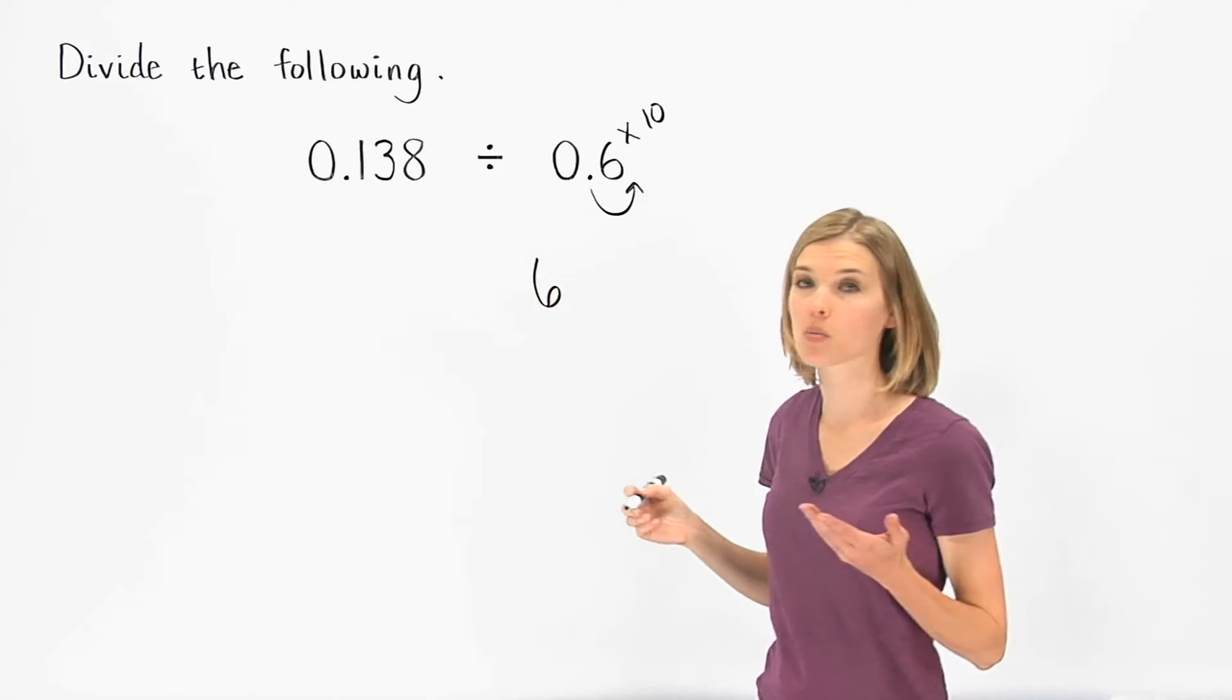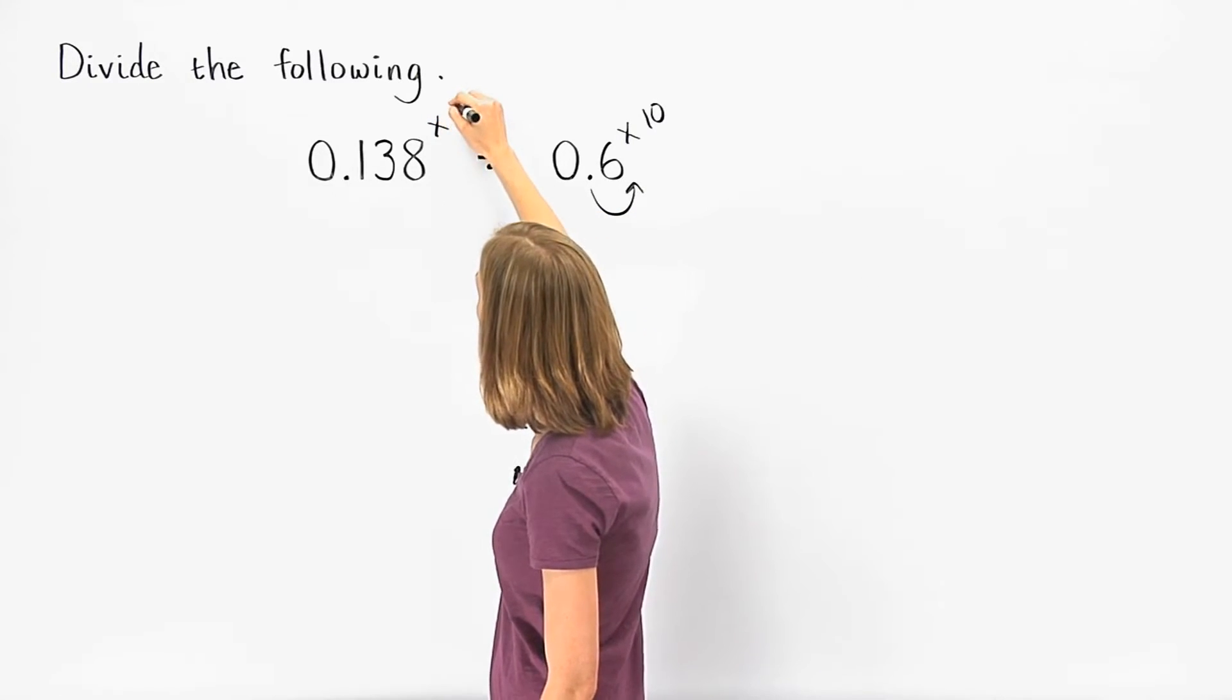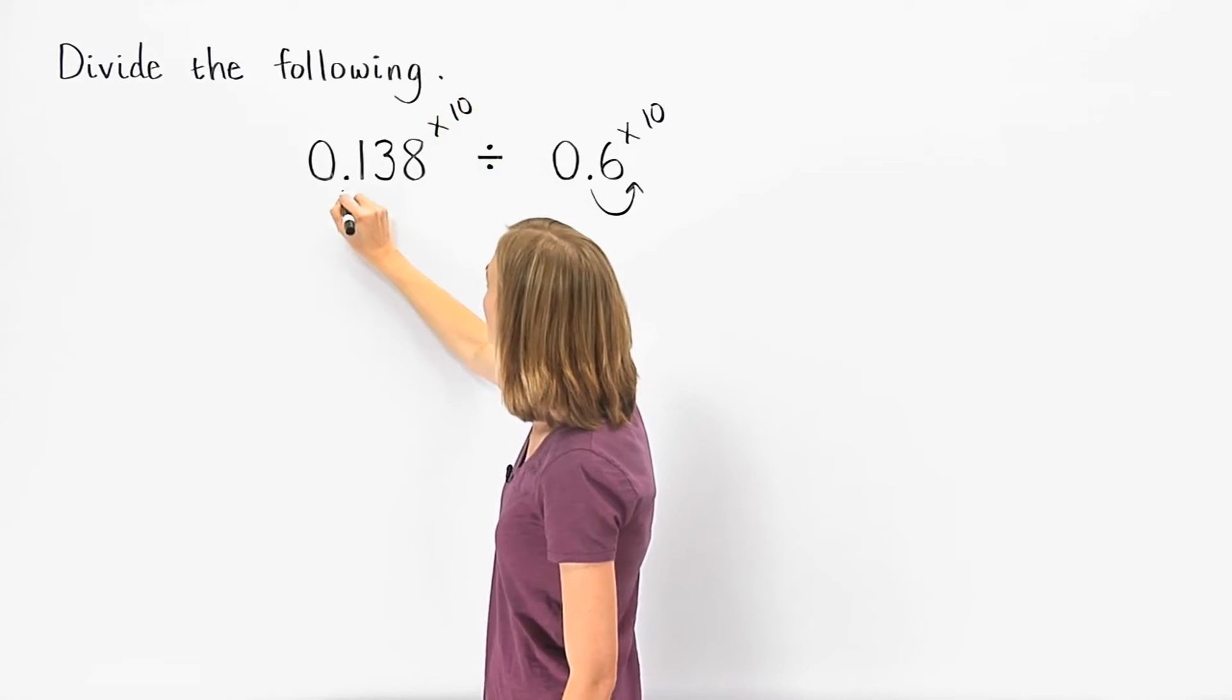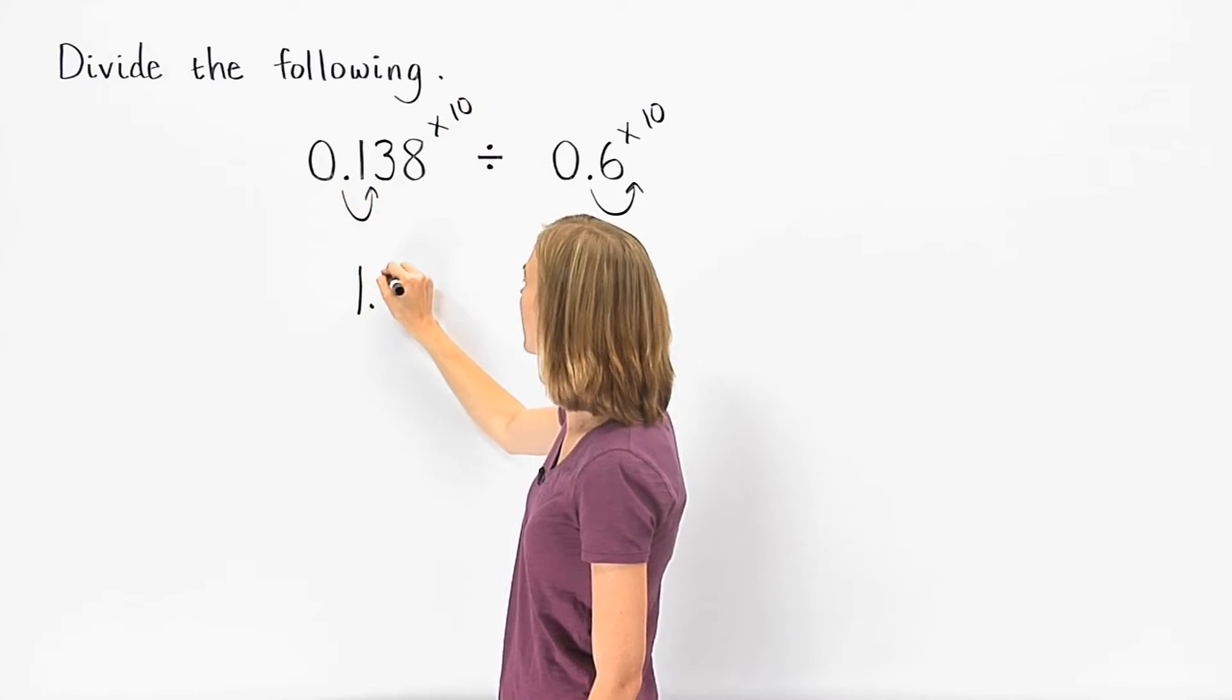however, we also must multiply 0.138 by 10. This moves the decimal point one place to the right, giving us 1.38.